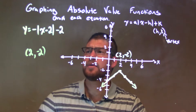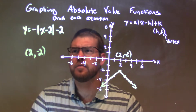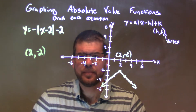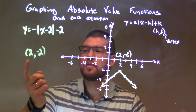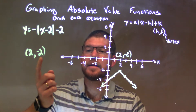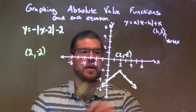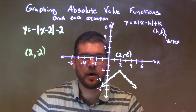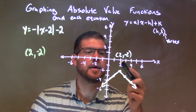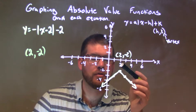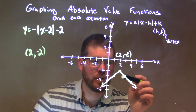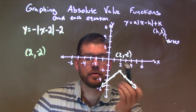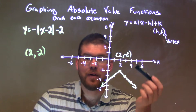Quick recap: we're given y equals the negative absolute value of x minus 2, and then minus 2 on the outside. That gives us a vertex of positive 2 comma negative 2. Plot that down. Our a-value is negative 1 out front, so negative makes it a roof shape. Then we have a slope of negative 1 — down 1 to the right 1, down 1 to the right 1 — mirror that to the left. Then we have our graph, which is our final answer.